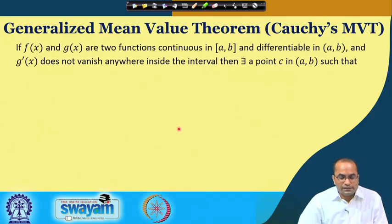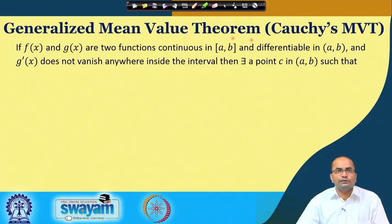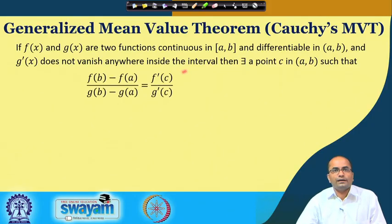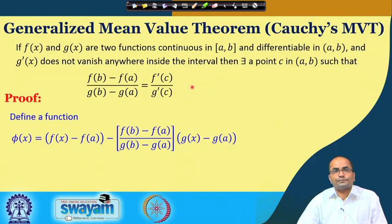There is another theorem: the generalized Mean Value Theorem, also called the Cauchy Mean Value Theorem. Here we consider two functions instead of one. If f and g are continuous on [a, b] and differentiable on (a, b), and g'(x) does not vanish anywhere inside the interval, then there exists a point c in the open interval such that [f(b) - f(a)] / [g(b) - g(a)] = f'(c) / g'(c).